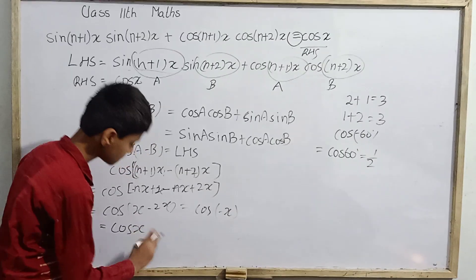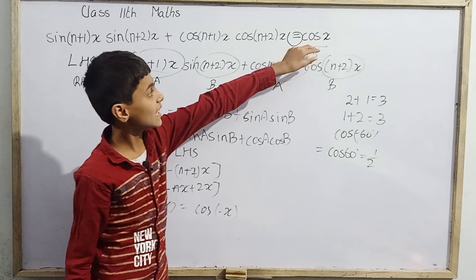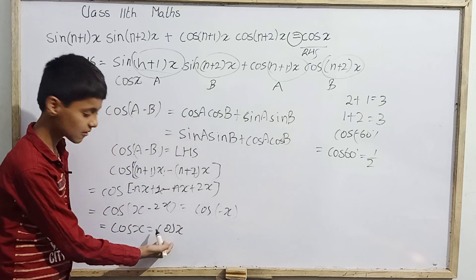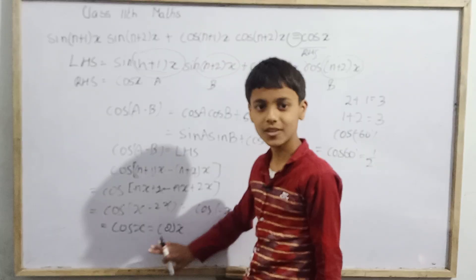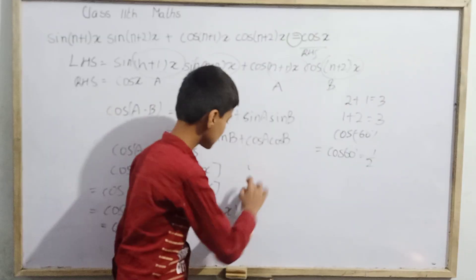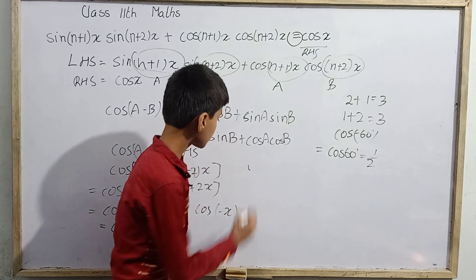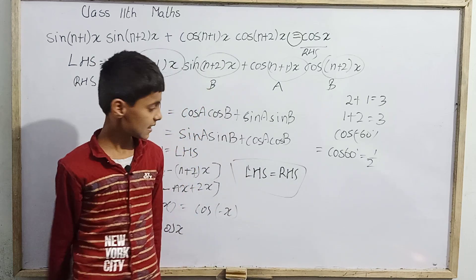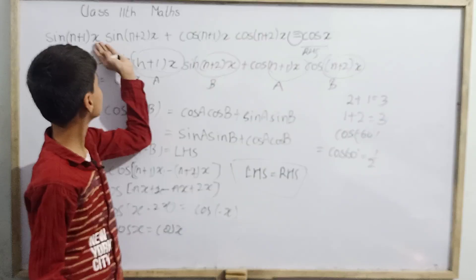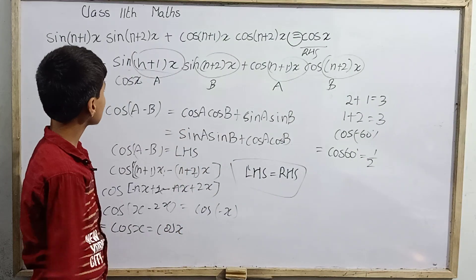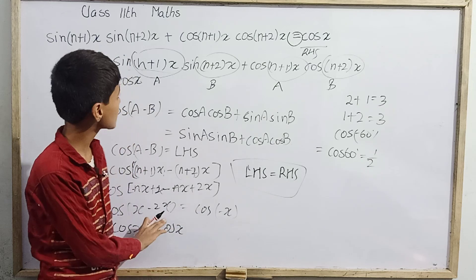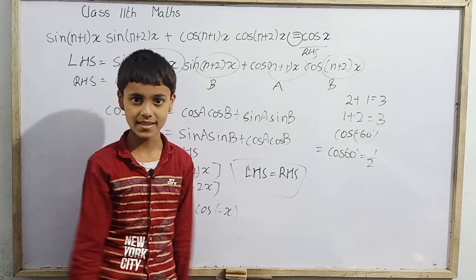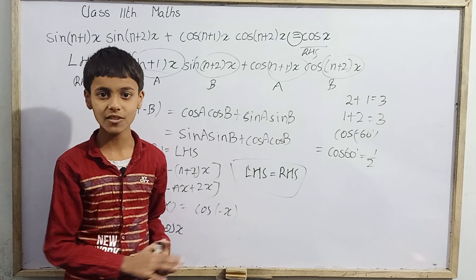So LHS = cos x, and our RHS was also cos x. Therefore LHS equals RHS, and we have successfully proved that sin(n+1)x · sin(n+2)x + cos(n+1)x · cos(n+2)x = cos x. That's how we prove this statement. Thank you.